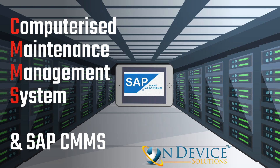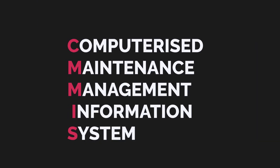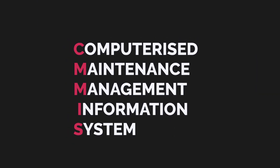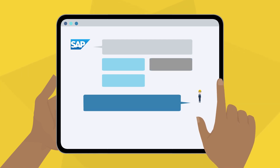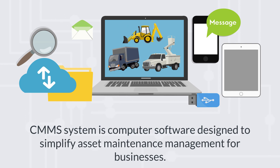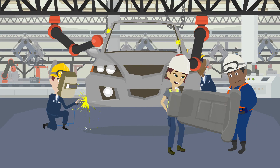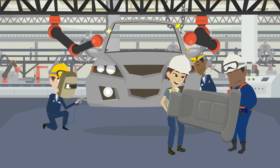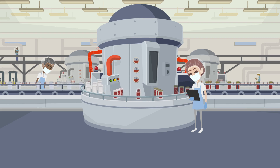CMMS stands for Computerized Maintenance Management System. It is also known as CMMIS, or Computerized Maintenance Management Information System. A CMMS system is computer software designed to simplify asset maintenance management for businesses. Maintenance management entails perfectly preserving all the resources and physical assets a company owns, ensuring effective operations with minimum or no money wasted due to asset downtime.